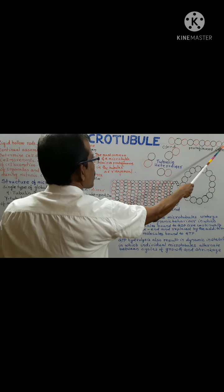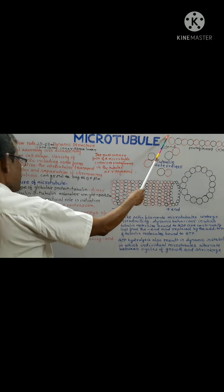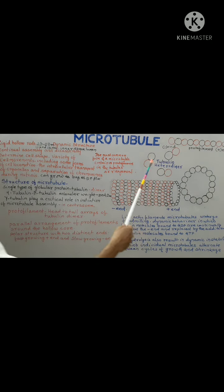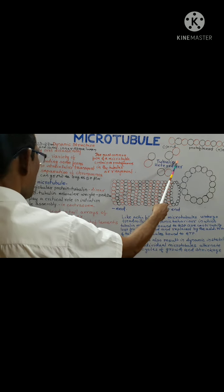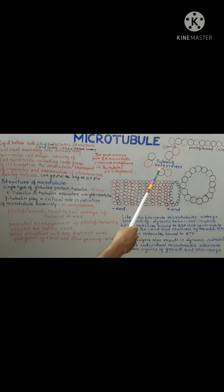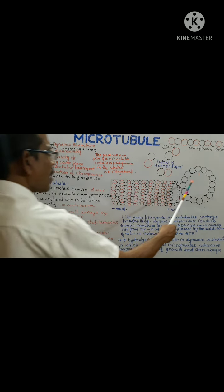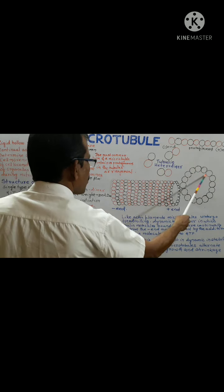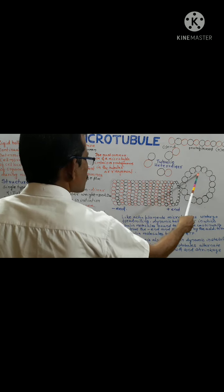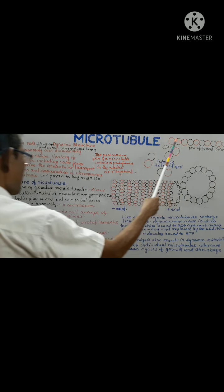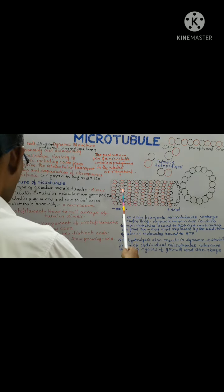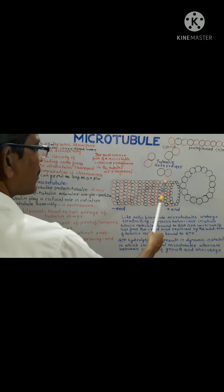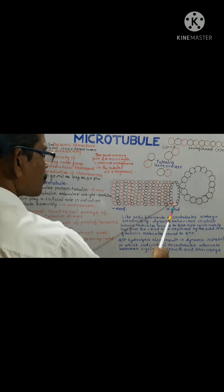The plus end and minus end are established in the protofilament. After protofilament formation from tubulin heterodimers, these protofilaments are arranged in a parallel manner around a hollow core to form a microtubule. This microtubule is a polar structure.